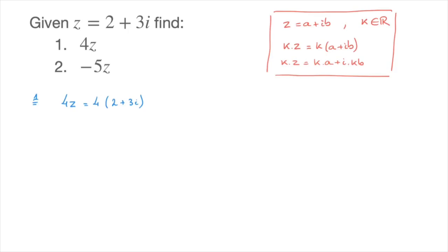Now following the rule we just wrote in red, all we have to do is distribute this 4 across the parentheses, so that would equal 4 times 2 plus 4 times 3i. In other words, 4z is equal to 8 plus 12i. And that's the answer.